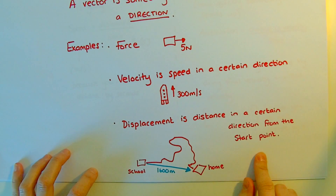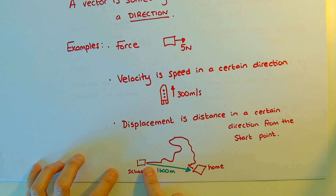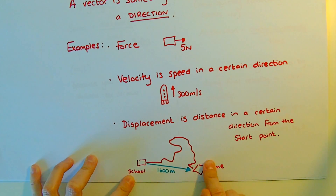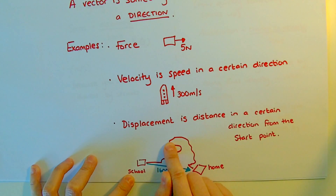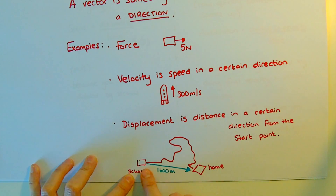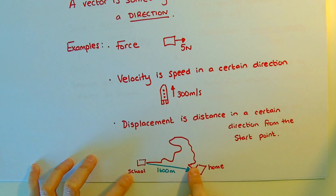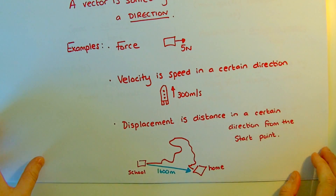Displacement is distance in a certain direction. So going from school to home, you might go along some roads via your friend's house, via the park, via the shops — that is the distance you have travelled. Your displacement is a straight line from the start to the finish, with a size and a direction.